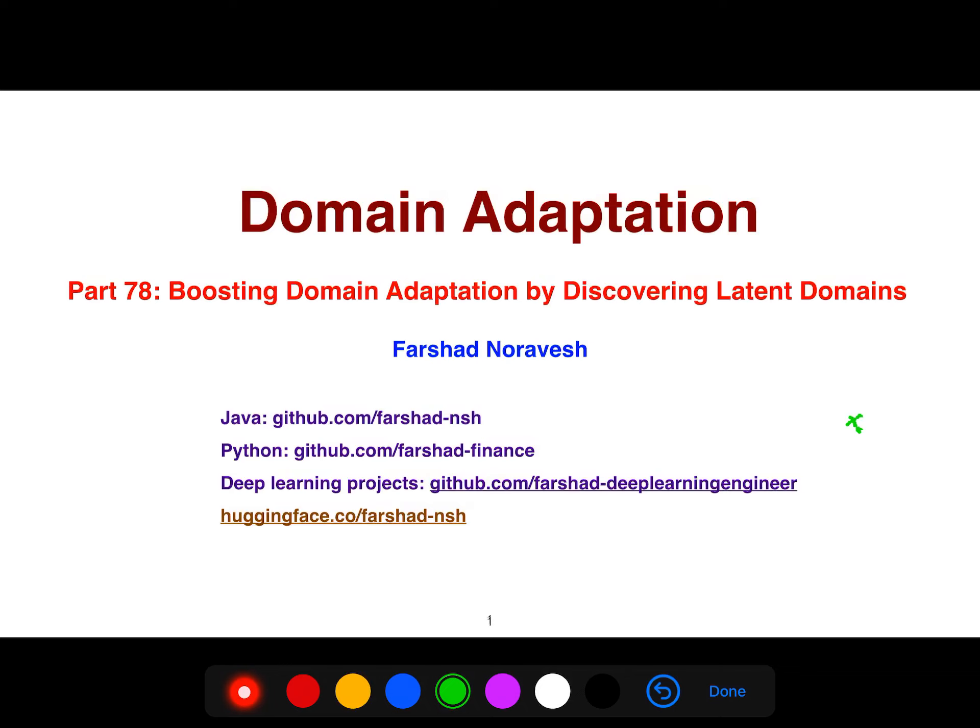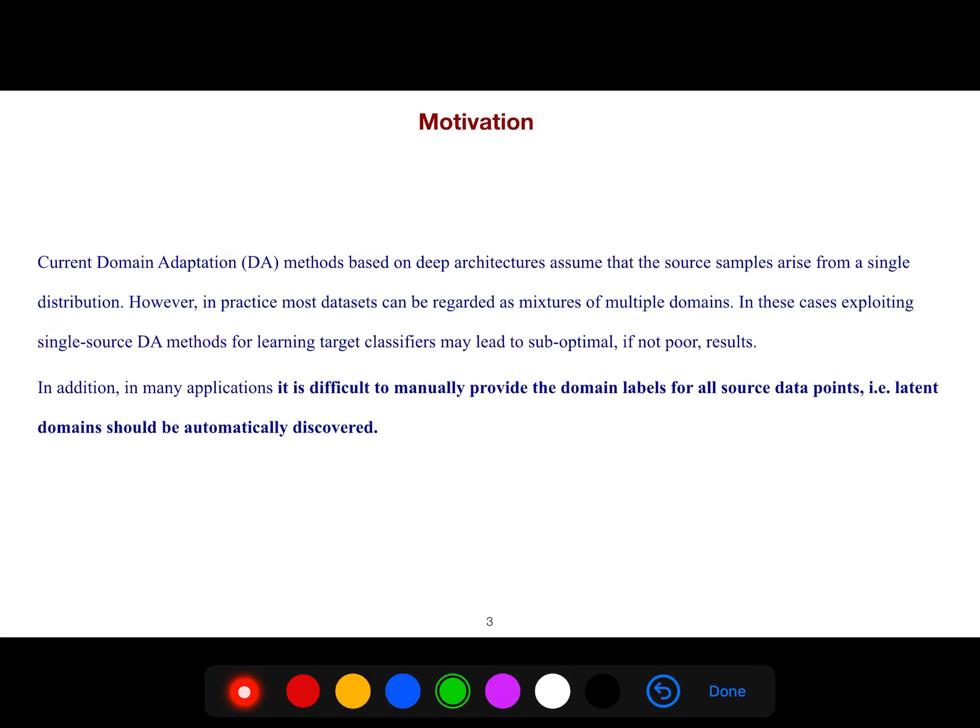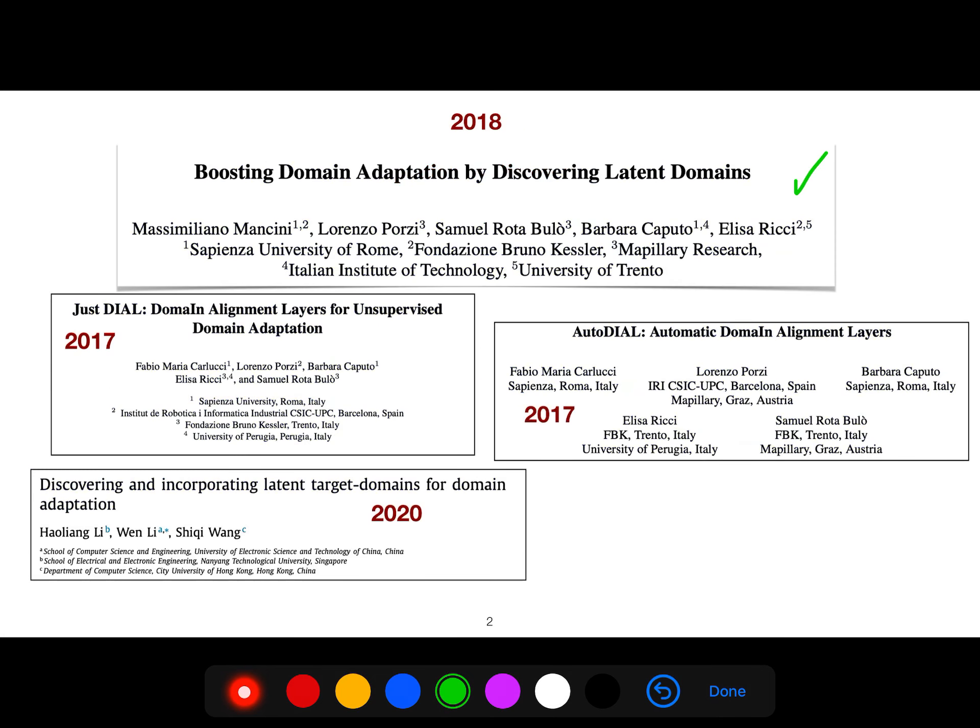Alright, so in this video I'm going to be explaining another important article with the title Boosting Domain Adaptation by Discovering Latent Domains. This paper from 2018 is very important, and there are other relevant articles, for example, Discovering Latent Target Domains.